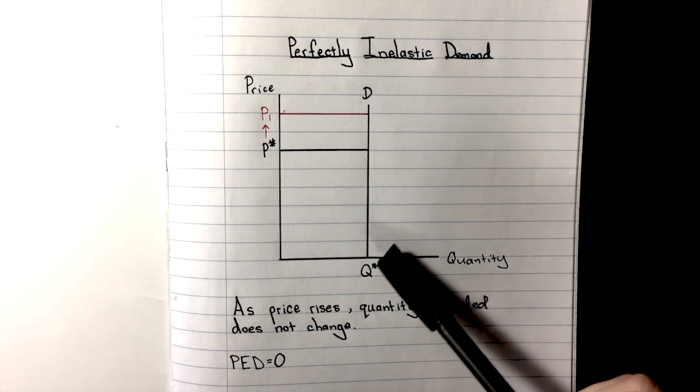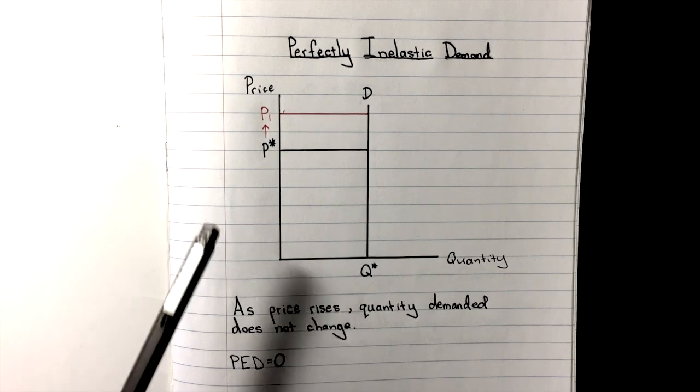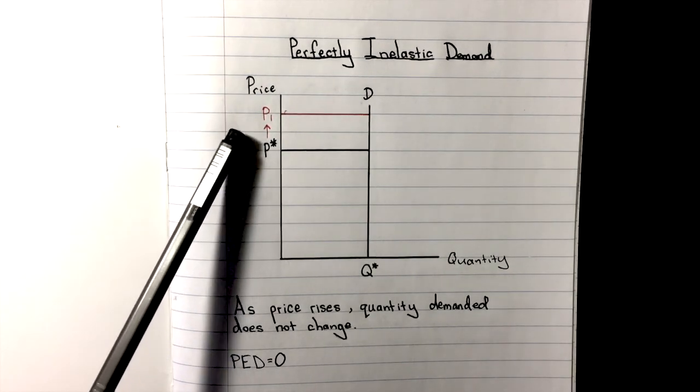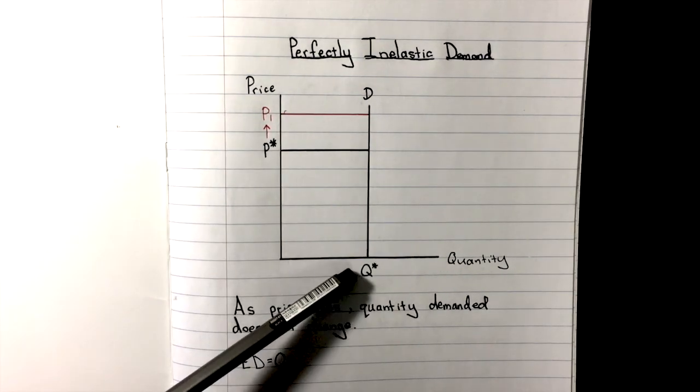Which you can see is perfectly vertical, which means that any change in price, whether upwards for an increase or downwards for a decrease, the quantity demanded does not change.